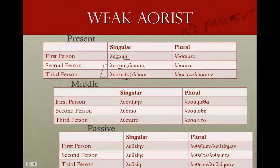What has happened here is that this is what you would expect, but in fact what has happened is we have a sort of alternate ending where the epsilon and the alpha have shifted spaces. This is more common in Attic Greek. So: λύσαιμι, λύσειας, λύσειε, λύσαιμεν, λύσειτα, λύσειαν.